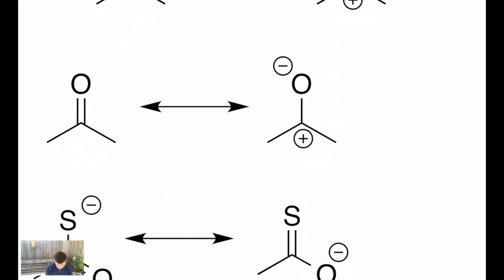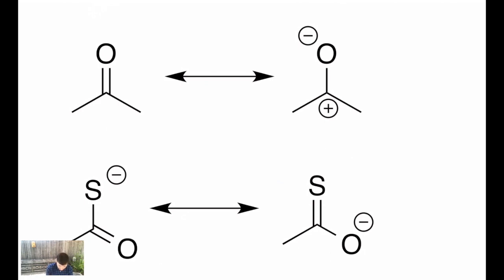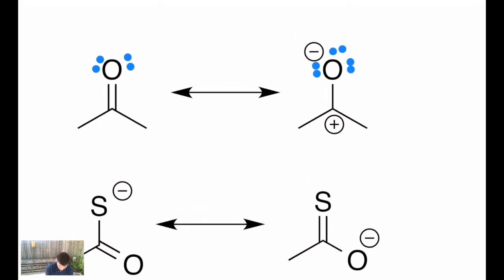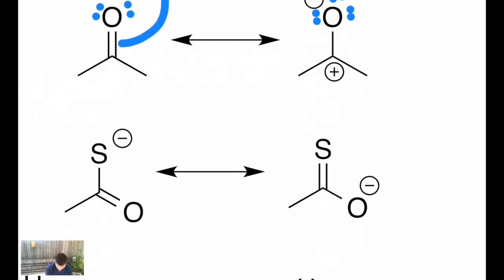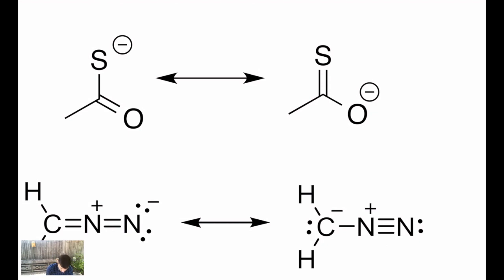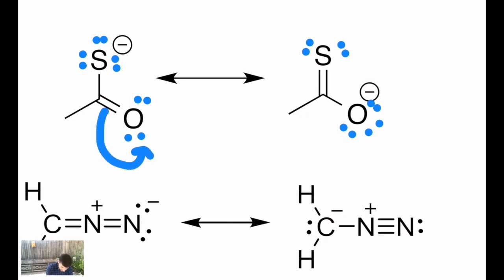Below that we have a ketone resonance contributor. There are two lone pairs on the oxygen on the left, but the one on the right ends up having three — again, the formal charge communicates that to me based on the charge and bonding around that atom. Just one curved arrow from the carbon-oxygen pi bond up to the oxygen gets me from the left to the right. Then here we have a sulfur — sulfur is oxygen's bigger brother. It has three lone pairs when negatively charged, only two when neutral. This will take two curved arrows to show how the pi bond becomes an unshared pair, and simultaneously how an unshared pair becomes a shared pair between the sulfur and the carbon.